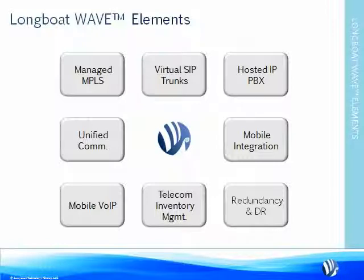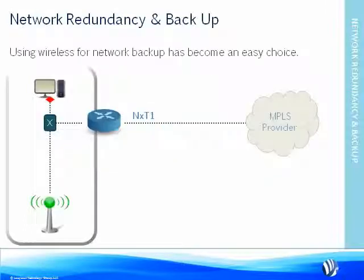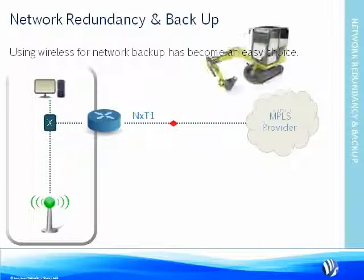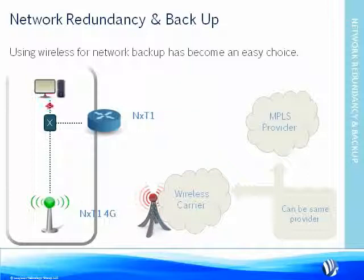Cloud architectures offer clear redundancy and disaster recovery benefits. While voice services can be rerouted to mobile devices and alternate end office locations, what about data services? Using wireless for network backup has become an easy choice. Here we see an end office location sending and receiving data over its primary MPLS circuit. When a local construction project cuts the primary circuit, data automatically reroutes over the wireless broadband connection — in this case a 4G WiMAX connection through a mobile broadband router. Both services can be delivered by the same carrier, and in times of heavy traffic, you can leverage the wireless connection for load balancing.